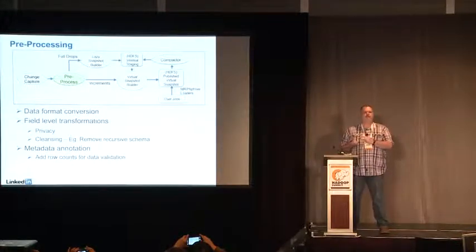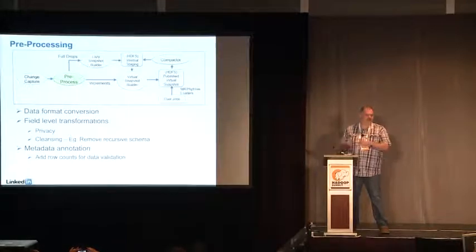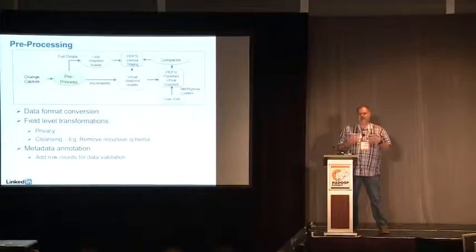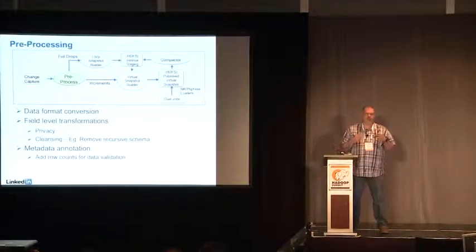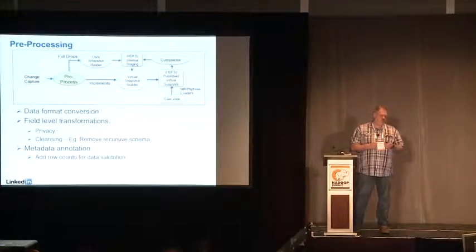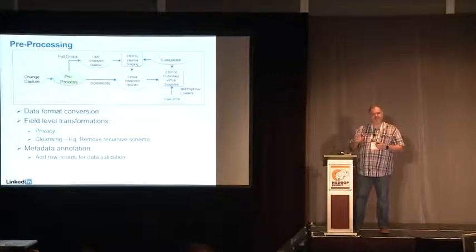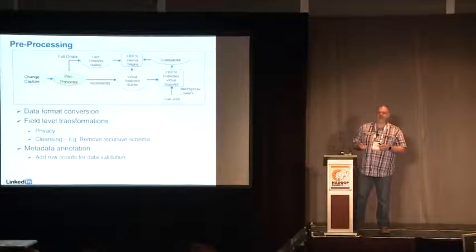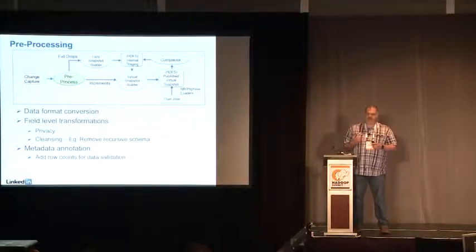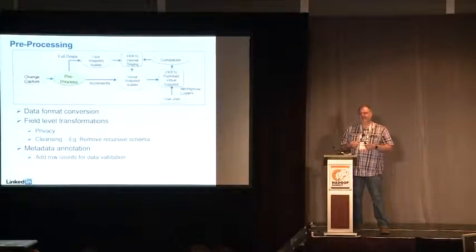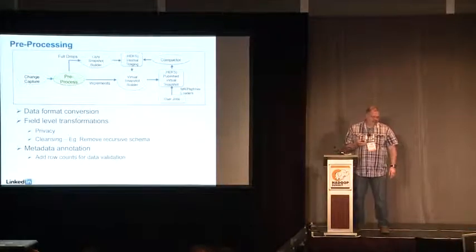Once we have the data, we do a little pre-processing. For the Oracle extracts, they come to us as flat files and we convert those into Avro. We do metadata annotation: we want to know if it's a full read, what time it ran, so we can apply the appropriate deletes. We also track row counts for downstream verification that we have all the data. As far as field-level transformations, we try to avoid changes — we want the data to be a true representation of what's in production. But for privacy reasons, we may need to mask or remove certain fields. Also, many downstream processes like Pig and Hive do not handle recursive schemas well, so we may flatten those out.